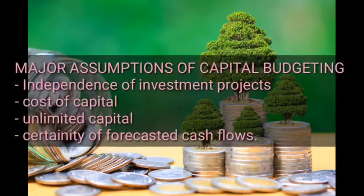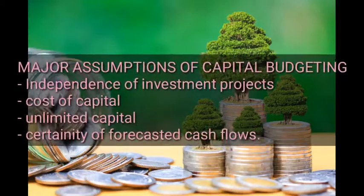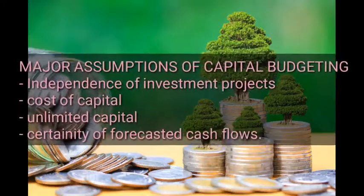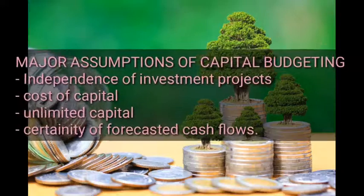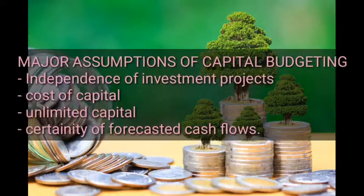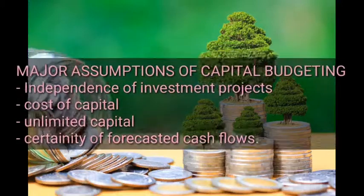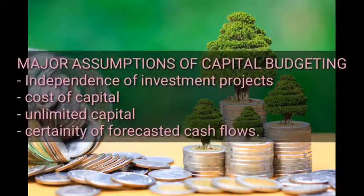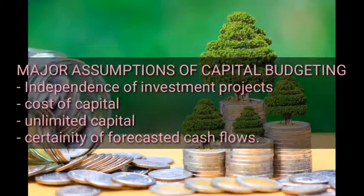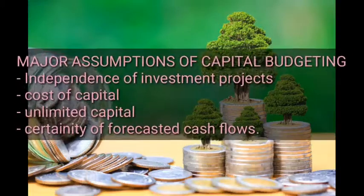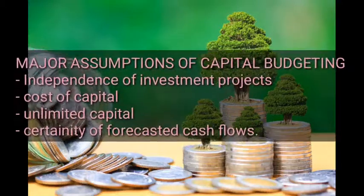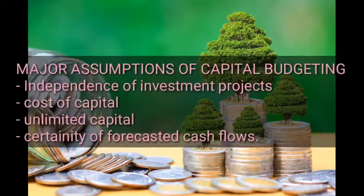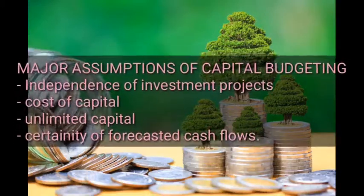Capital budgeting is based on assumptions like cost of capital, limited capital, certainty of forecasted cash flows, and independence of investment projects. Independent projects are those that can easily be run alongside other projects — for example, operating a mobile money business and a saloon together. In capital budgeting, they assume all investment projects are independent.